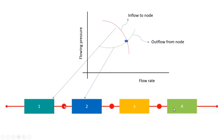For this system to function properly and naturally, the flow rate into the node needs to be the same as the flow rate out of the node — that's the reason why we have this point of intersection. If the flow rate into the node is not the same as the flow rate out of the node, the well cannot function. Even an artificial lift method comes in to re-energize the system and make sure there is a point where the inflow into the node equals the outflow from the node.